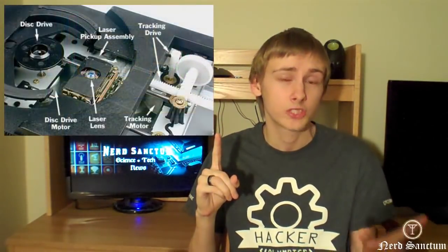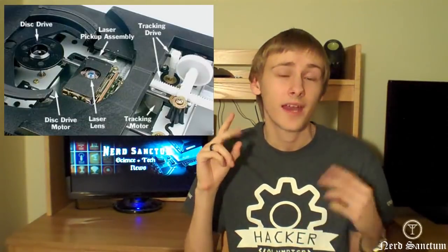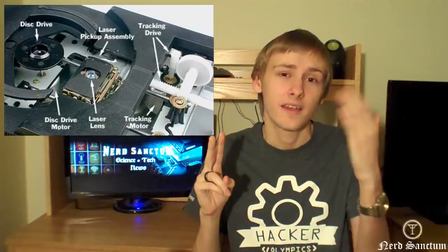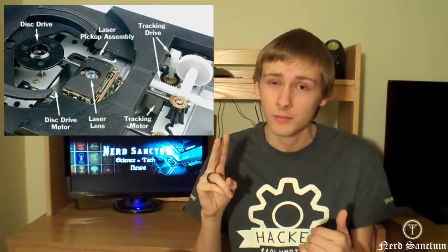Now let's look at how devices are used to read data from these discs. Most disc reading devices are made out of three main components. You have the drive motor, which actually spins the disc. Then you have a laser and lens pair, which shoot a laser onto the disc and detect reflections. And then you have the tracking mechanism, which moves the laser and the lens from the inside of the disc to the outside, following that single file line of data.